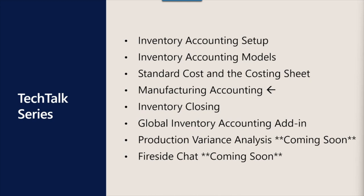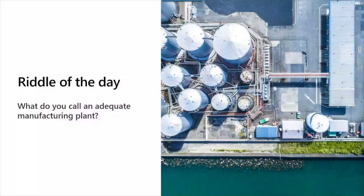Parts one through three have been recorded and you can find those recordings on the Tech Talk Dynamics community page. We are back, as usual, with another riddle of the day. This time it's not an accounting joke — we've switched it up with a manufacturing joke. Today's question is: what do you call an adequate manufacturing plant? We invite you to put your guesses into the Q&A panel, and we will reveal the answer at the end.